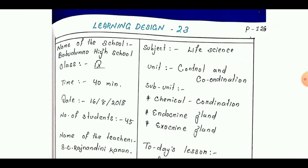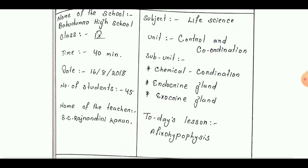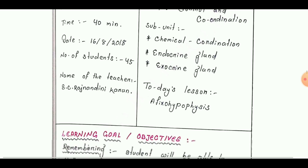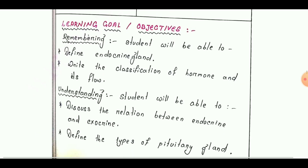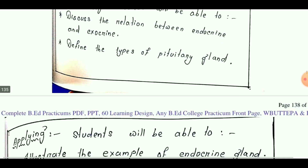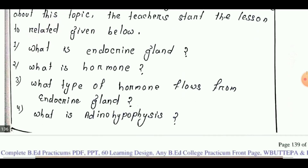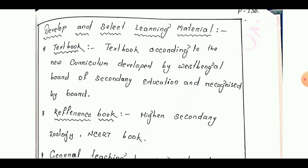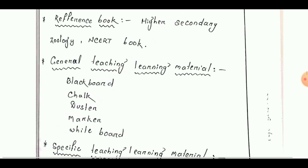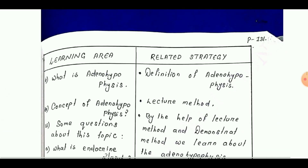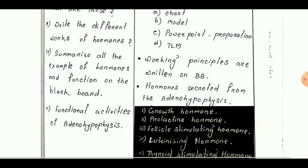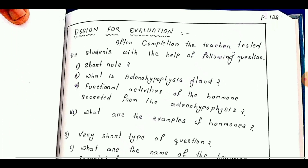We have reached learning design number 23, taken from Class 9. Learning goals are: remembering, understanding, applying, analyzing, evaluating, and creating. Next is analyze learner and context, then develop and select learning materials. Next is teaching strategy, then design for evaluation, and diagnosing the weakness.